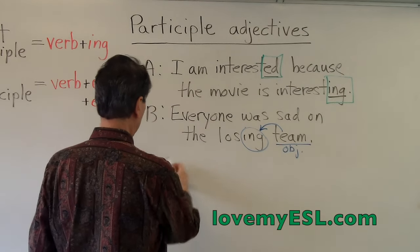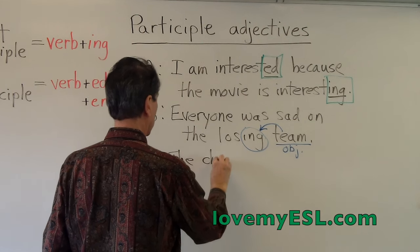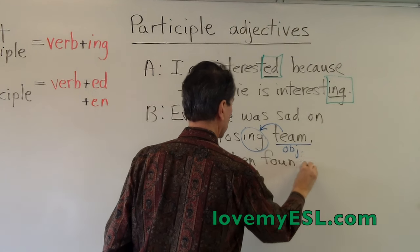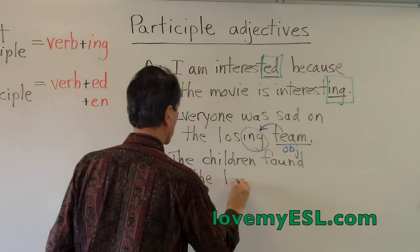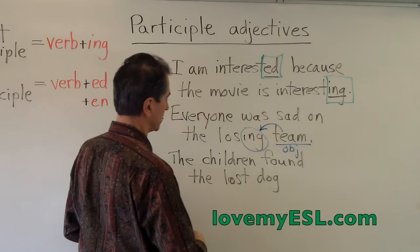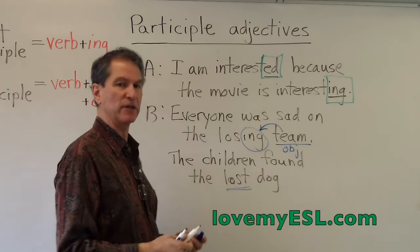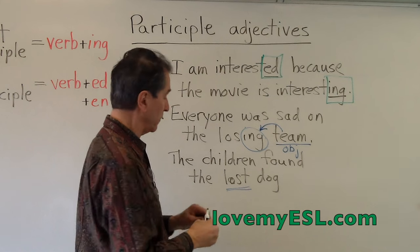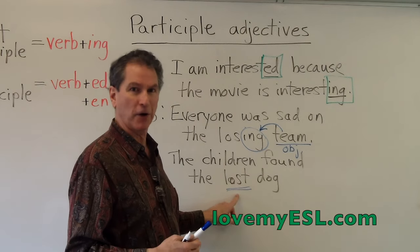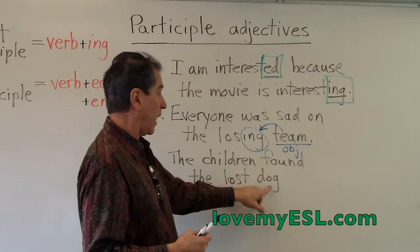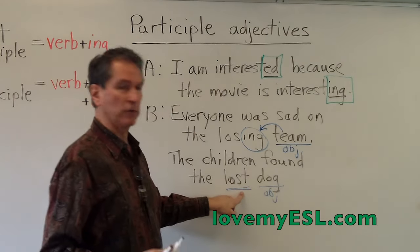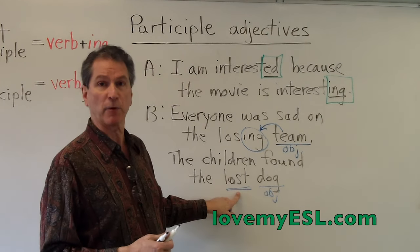Whereas if you look at this example: the children found the lost dog. This is not the present participle; this is the past participle — and as mentioned, some of these are irregular. Did the dog lose? No. The little boy lost the dog, but the dog didn't lose. So the object did not do this verb, and therefore it's in the past participle form: 'lost dog.'